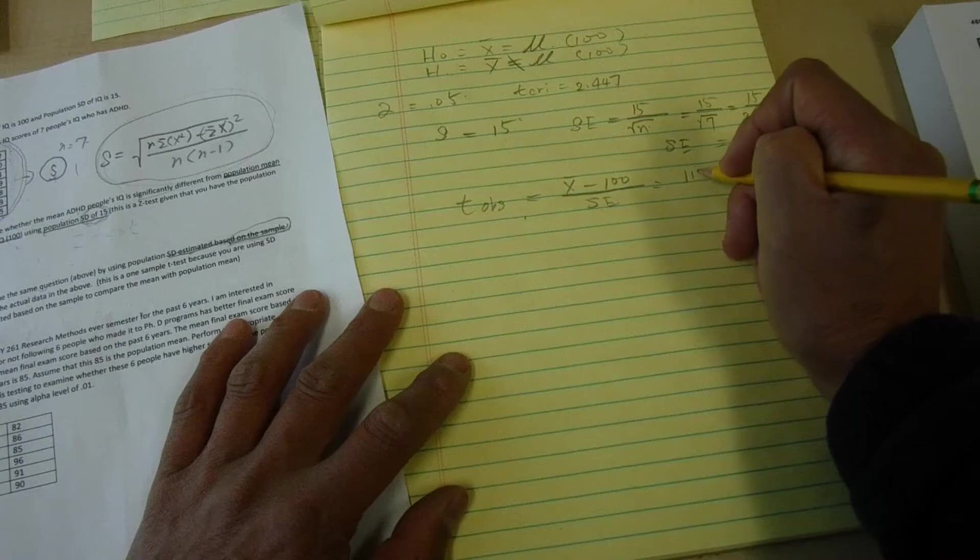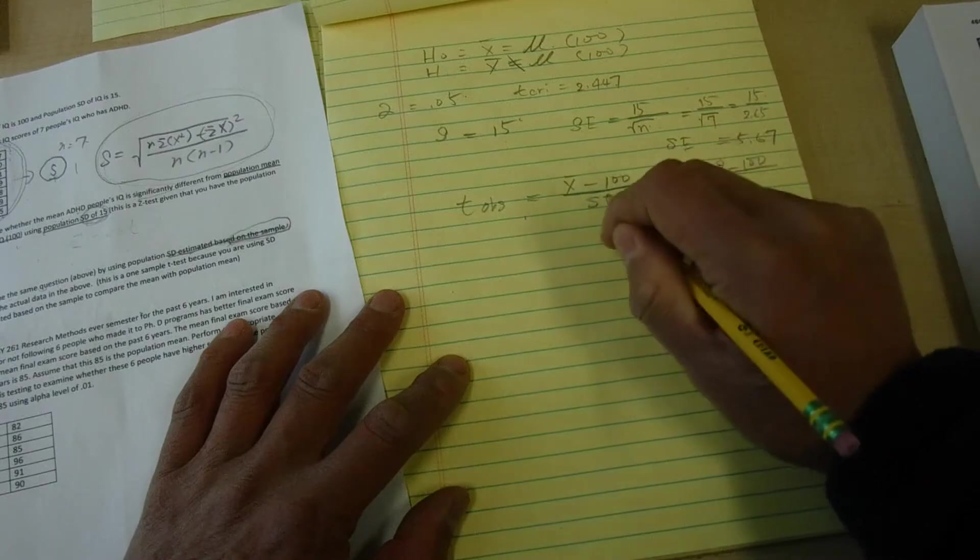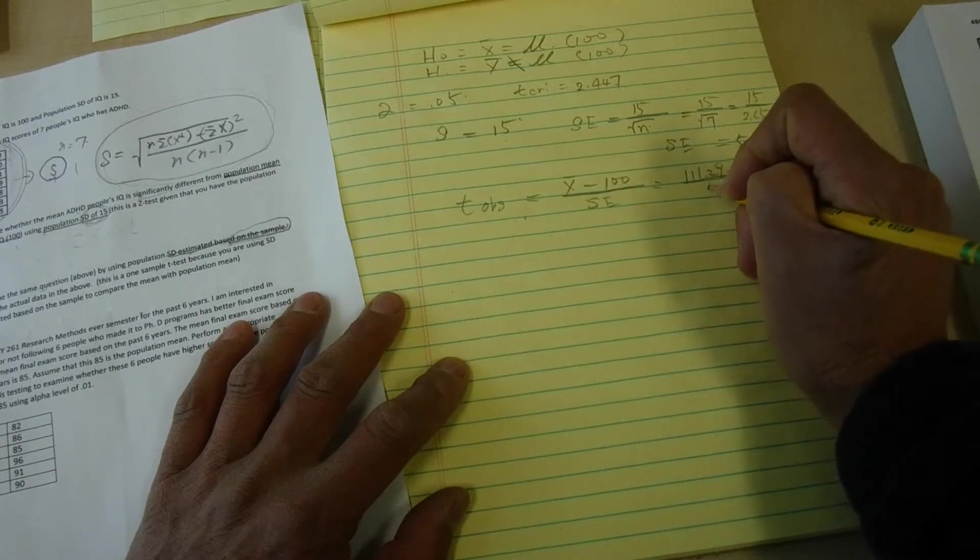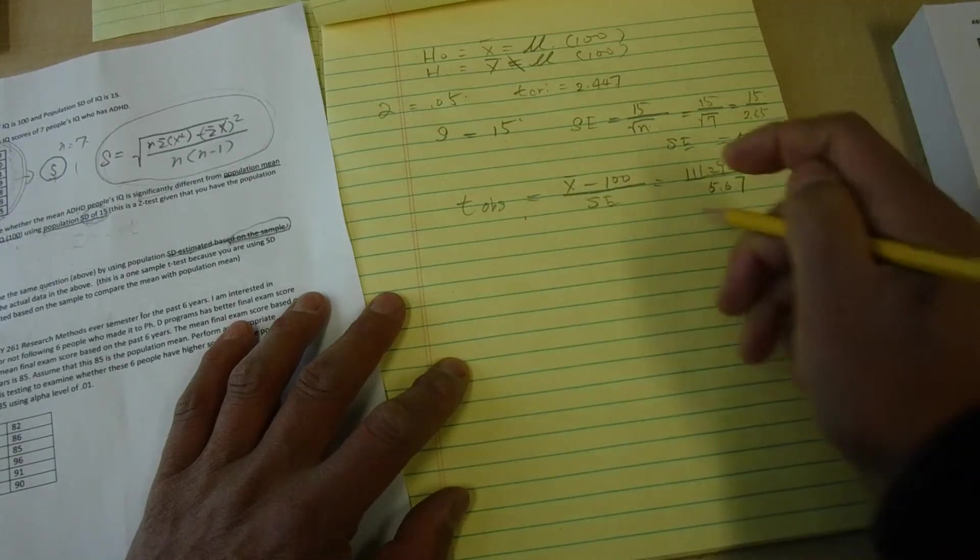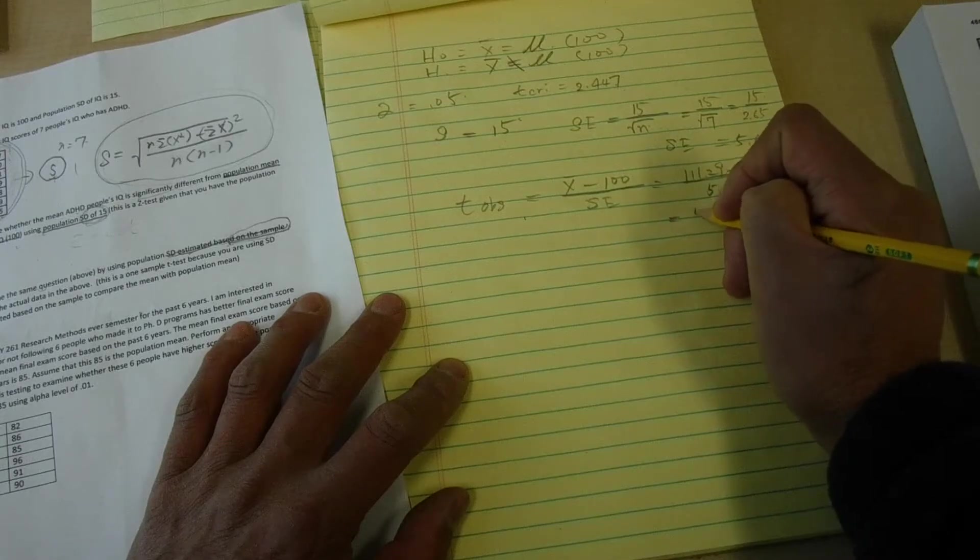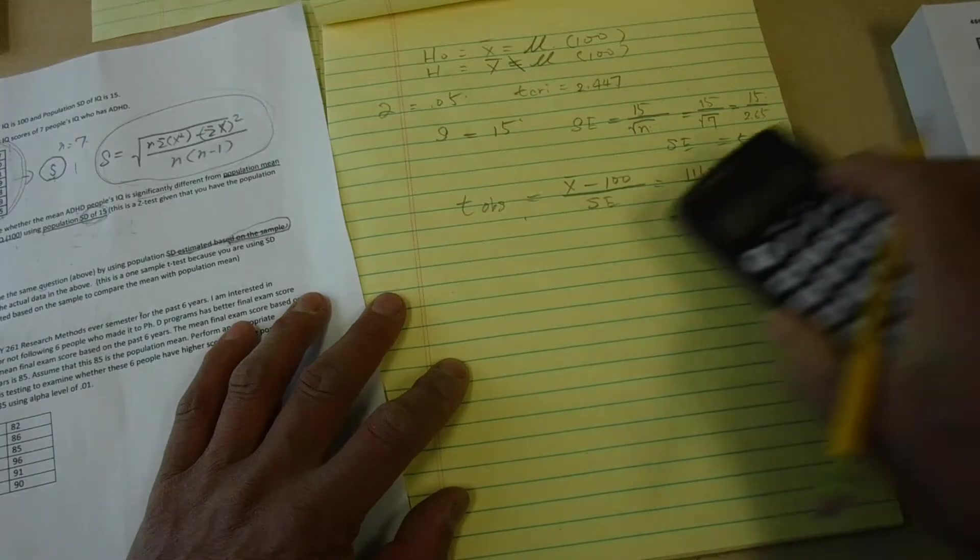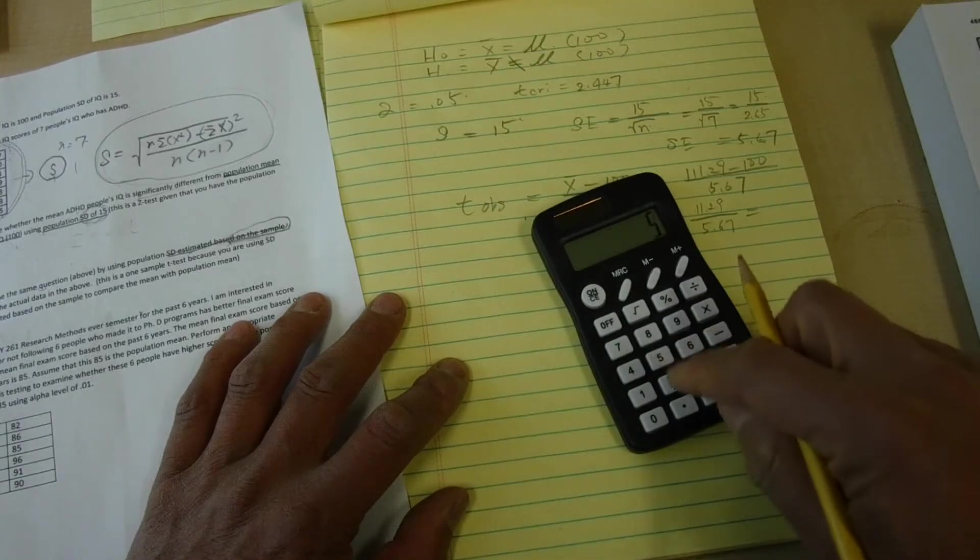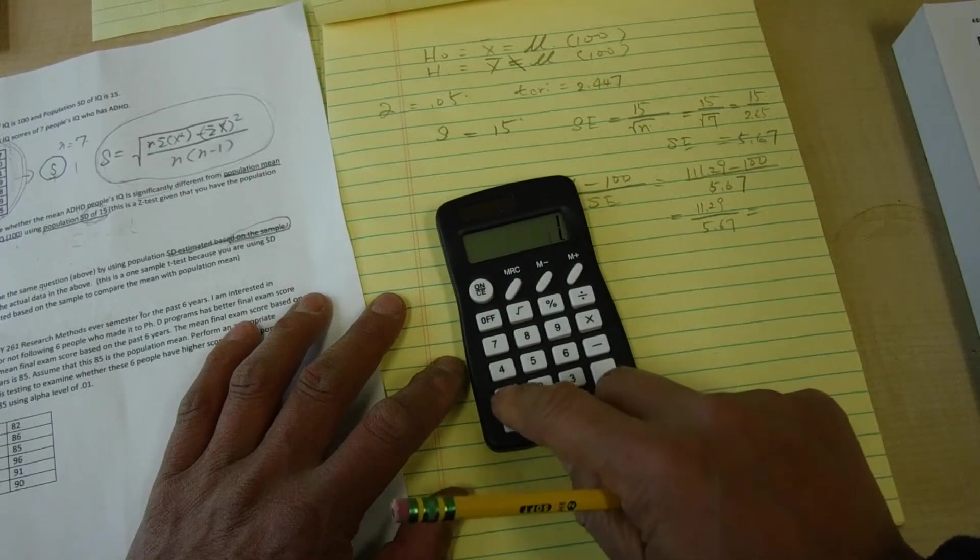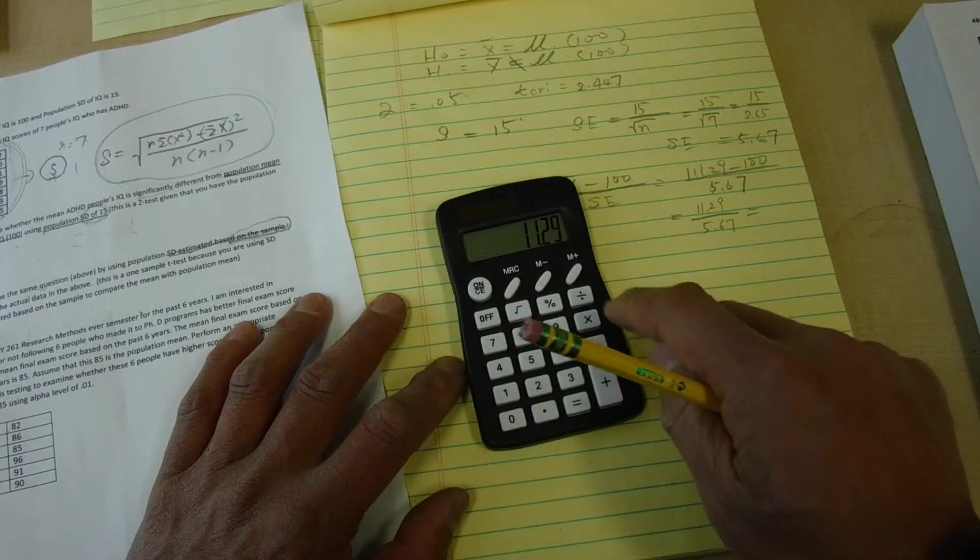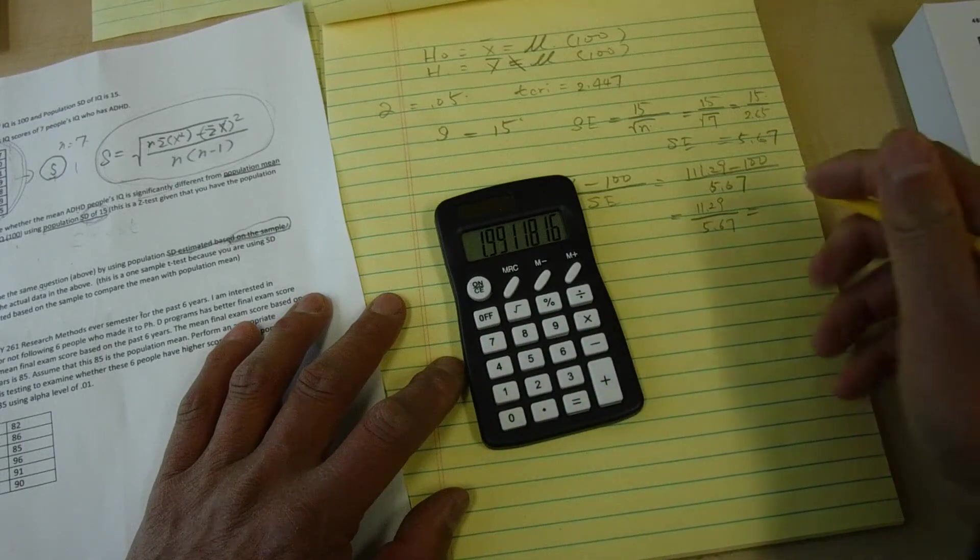So 111.29 minus 100, divided by 5.67. 11.29 divided by 5.67, equals 1.99.